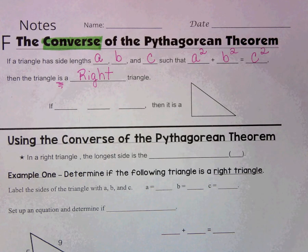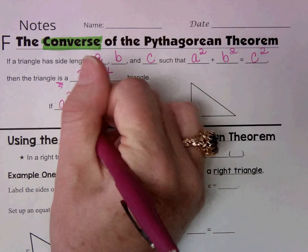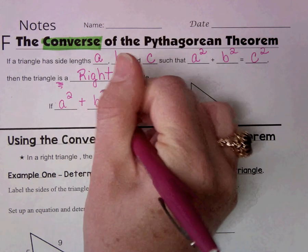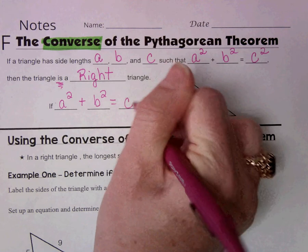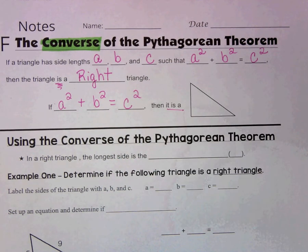So when we look at this, we're actually going to be given all of the side lengths. So it's just saying that if A squared plus B squared truly equals C squared, then it is a right triangle.